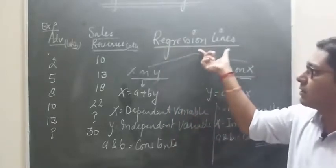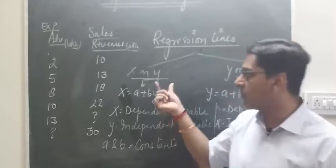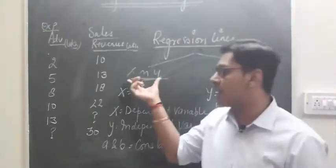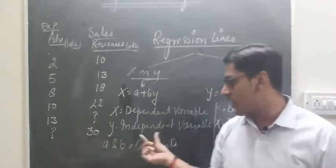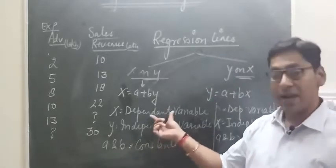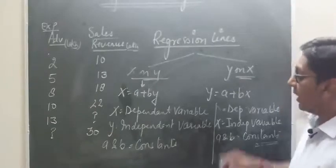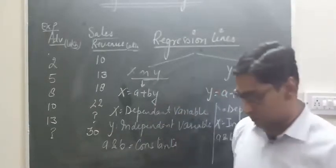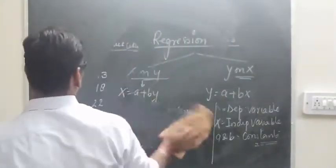In x on y, x is the dependent variable (आश्रित चर) and y is the independent variable (स्वतंत्र चर). To find these regression equations, there are three methods. Now we move to the calculation of regression equations.